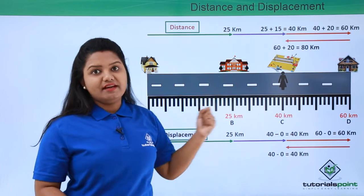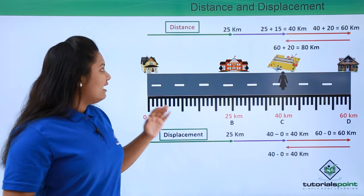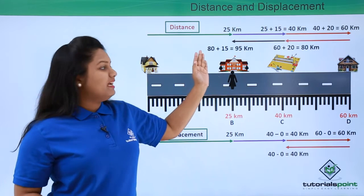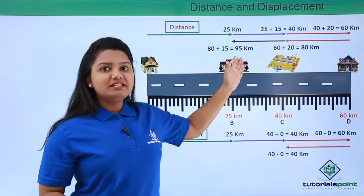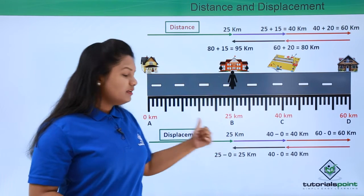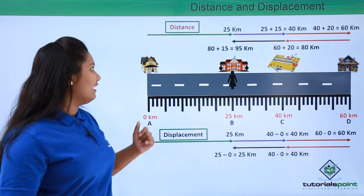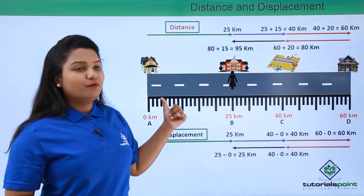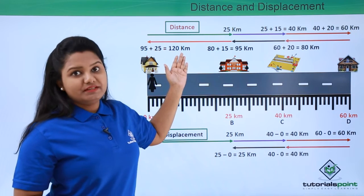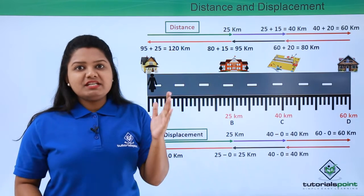So here the displacement is 40 kilometers while the distance is 80 kilometers — both are different. When I reach the school while returning, my total distance covered is 80 plus 15, that is 95 kilometers, but the displacement is final minus initial, which is 25 minus 0, that is 25 kilometers. When I reach back home, the total distance covered is 120 kilometers, but the displacement is 0 because my initial and final positions are exactly the same.